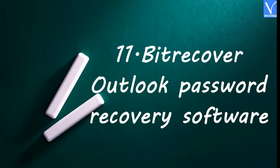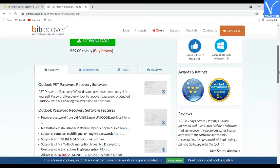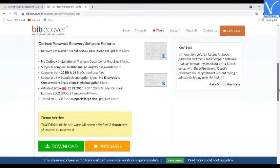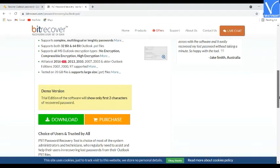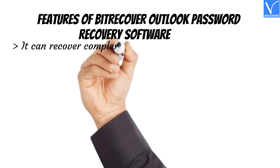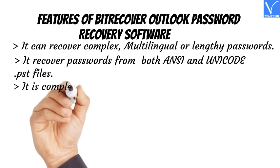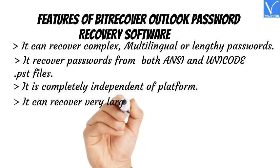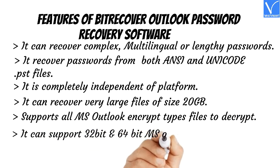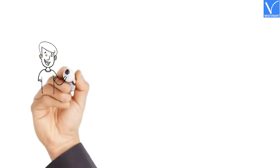Number 11: Bitrecover Outlook Password Recovery Software. The Bitrecover Outlook Password Recovery Tool will recover the Outlook password that you have forgotten or lost, and can also decrypt password-protected .pst files. It supports Outlook versions 2016, 2013, 2010, 2007, 2003, and older editions. Features: Recovers complex, multilingual, or lengthy passwords. Recovers passwords from both ANSI and Unicode .pst files. Completely platform-independent. Can recover very large files of size up to 20GB. Supports all MS Outlook encryption types. Supports 32-bit and 64-bit MS Outlook files. The price and plans of Bitrecover are exhibiting on the screen. The product link is provided in the description.